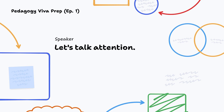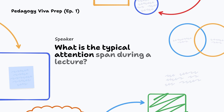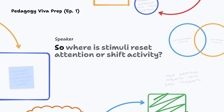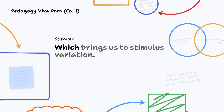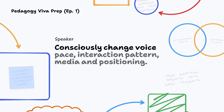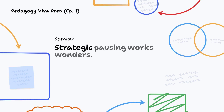What is the typical attention span during a lecture? About 10 to 20 minutes before it wanes. So use stimuli to reset attention or shift activity — which brings us to stimulus variation. Consciously change voice, pace, interaction pattern, media and positioning. Strategic pausing works wonders.